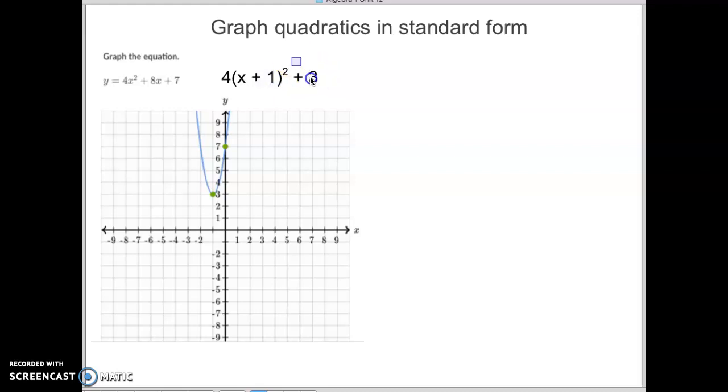And then the question is where did this one come from? So remember what you do is you take this number, you square it. 1 squared is 1, and then multiply that by the number in front of the parentheses. 1 times 4 is 4. So we've added, technically when we did this, we added 4 to our equation.